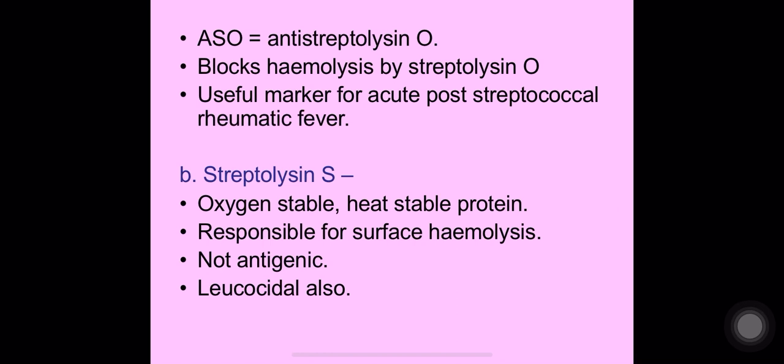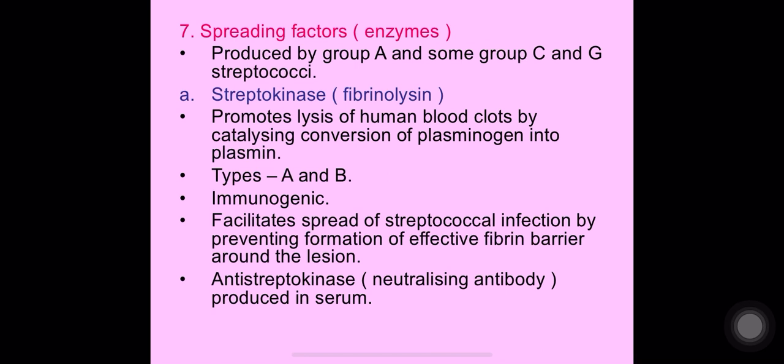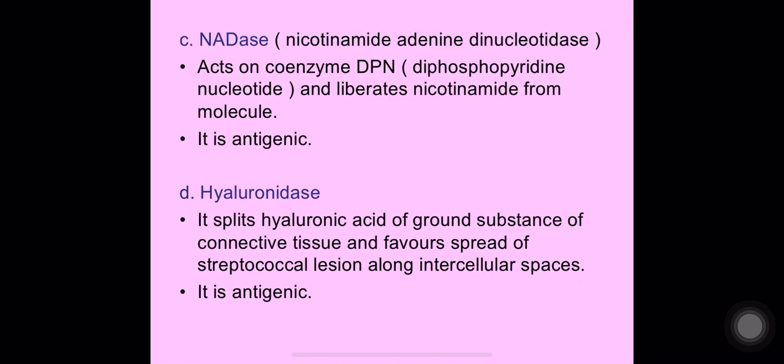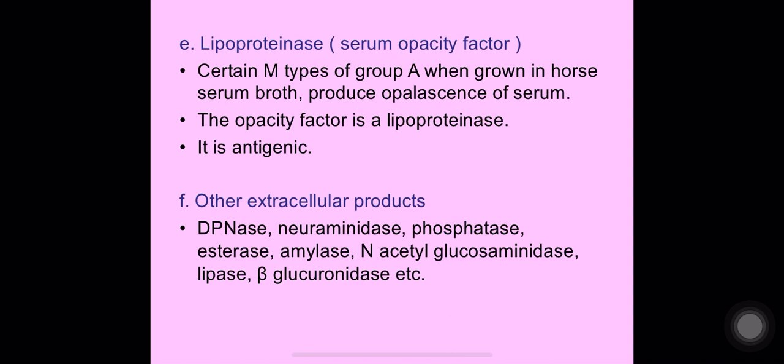The anti-streptolysin O (ASO) titer is used as a laboratory parameter for streptococcal infections. Streptokinase lyses fibrin clots and helps the bacteria spread in surrounding tissues. Streptodornase dissolves DNA from dead tissues, further aiding spread. Clinically, streptokinase and streptodornase have been used to liquefy localized collections of thick exudates, for example in pneumococcal empyema. NADase, hyaluronidase, and lipoproteinase also contribute to spreading lesions.